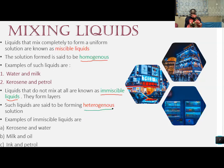Examples of immiscible liquids that form heterogeneous solutions are: water and kerosene forming two layers, milk and oil forming two layers, and ink plus petrol forming two layers. These are heterogeneous — meaning they don't mix. Even if you shake as much as you can, they will never mix; they remain apart.